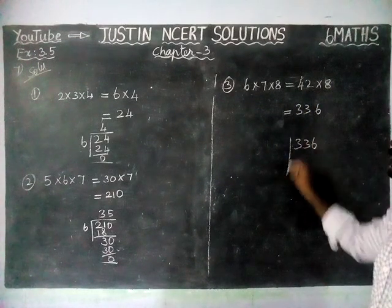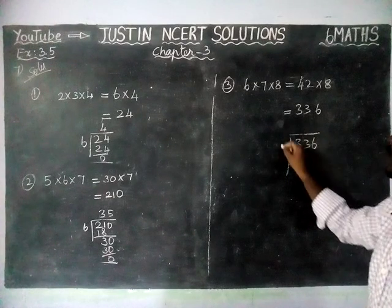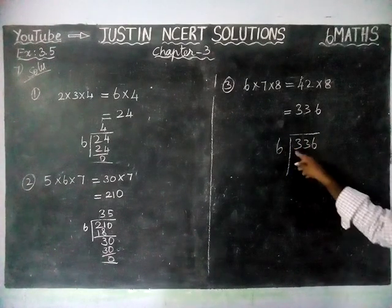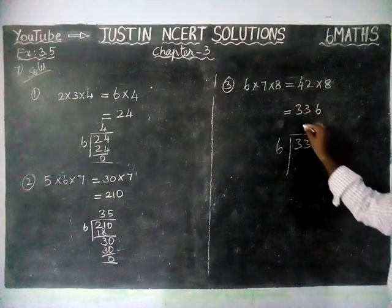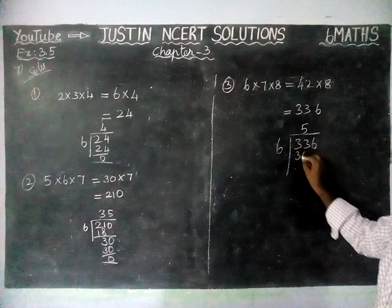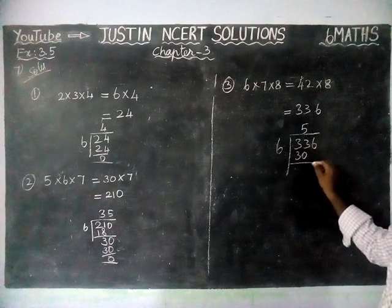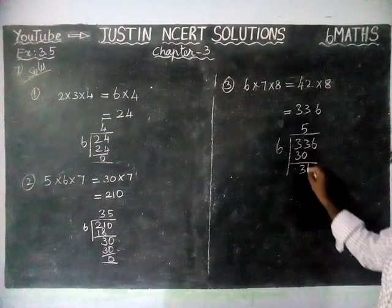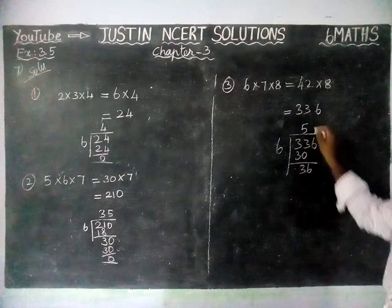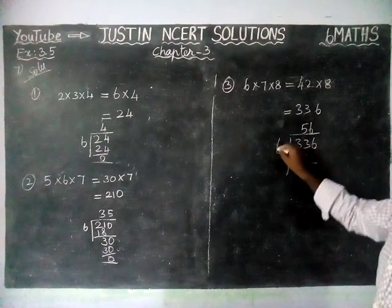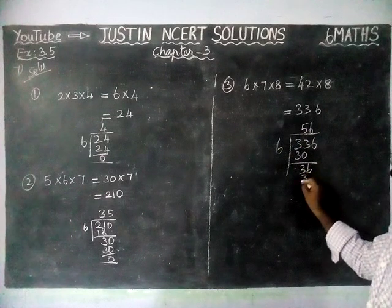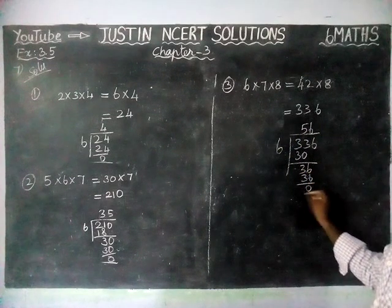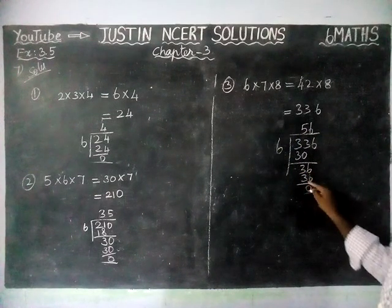We are going to divide 336 by 6. In 33, 5 sixes are 30, remaining 3. So we bring down the 6. 6 sixes are 36, remaining 0.